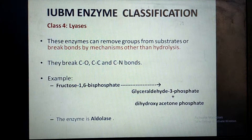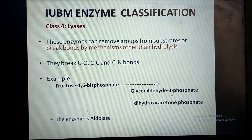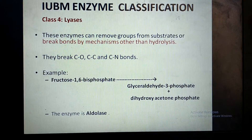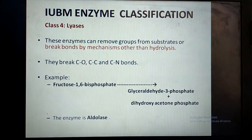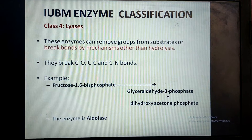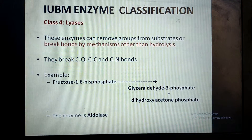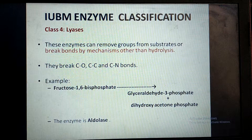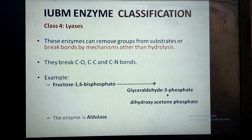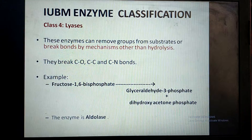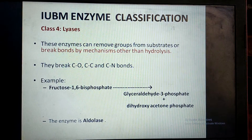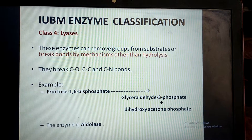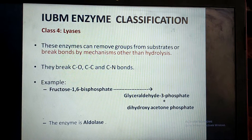Next is class 4, named lyases. In this group, those enzymes are present which break bonds without adding a water molecule, or which remove a group from the substrate by a mechanism other than hydrolysis. These enzymes break bonds like C-O bonds, C-C bonds, and C-N bonds. For example, the enzyme aldolase acts on fructose-1,6-bisphosphate and breaks this 6-carbon fructose into glyceraldehyde-3-phosphate and dihydroxyacetone phosphate by a process other than hydrolysis.